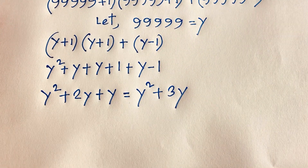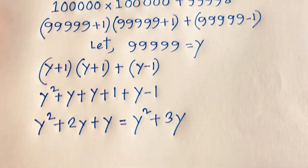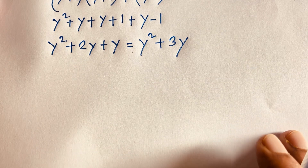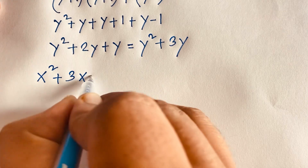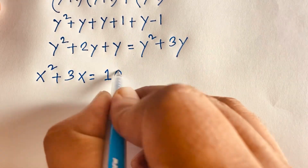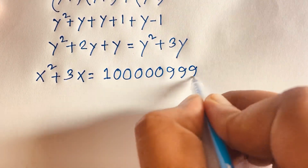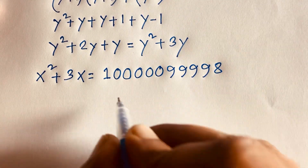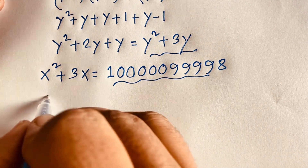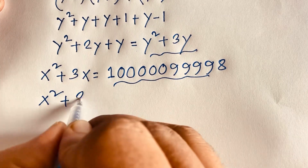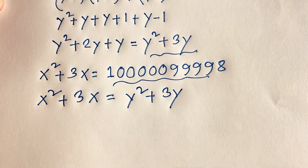It's okay. Now, recalling our first equation: x squared plus 3x is equal to our big number 1,000,099,998. We find out this is equal to y squared plus 3y. So I can see: x squared plus 3x is equal to y squared plus 3y.